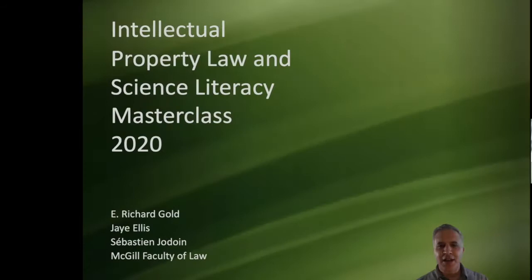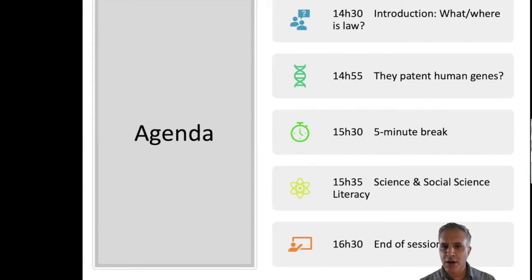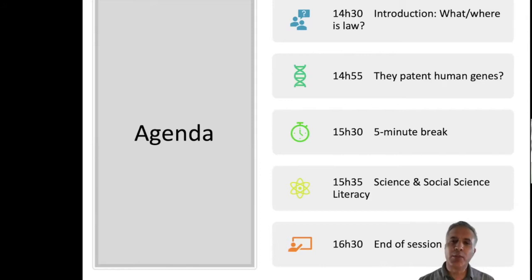Welcome, everyone. As I said, this is an intersocial property and science literacy class. What we're going to do for the first little bit is go through an introduction to law. And then we're going to talk about gene patents in particular — patents that affect the genetic code in your body, an area that I work on, but it illustrates some of the ethical issues, legal issues, and intellectual property issues that you would get if you took an intellectual property course.